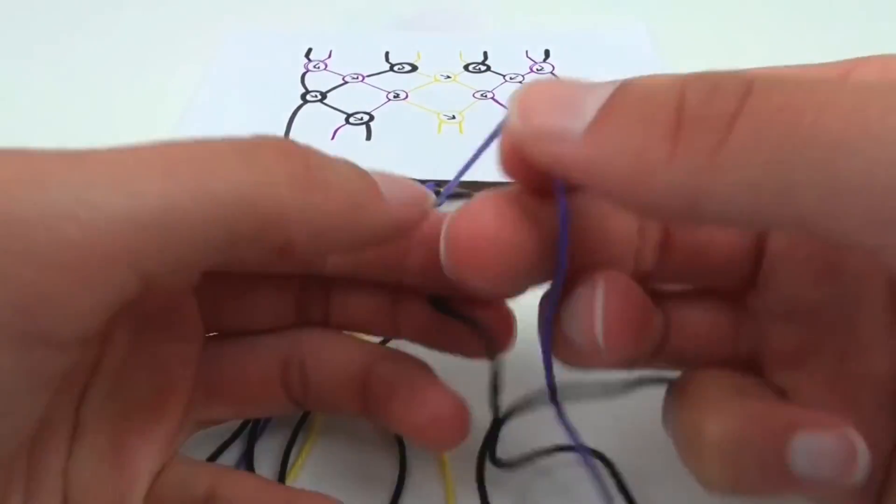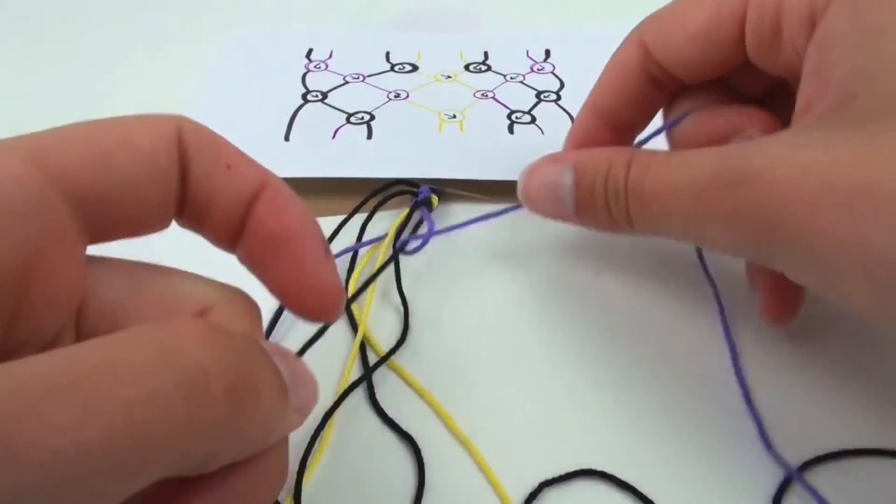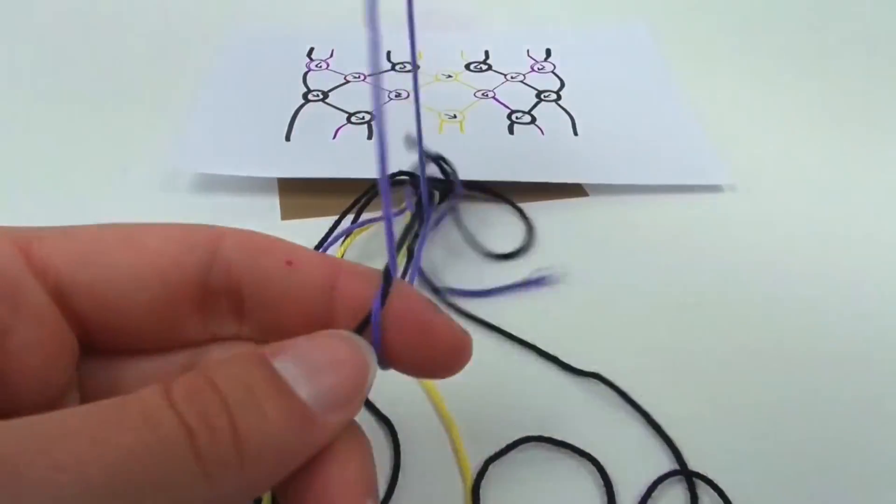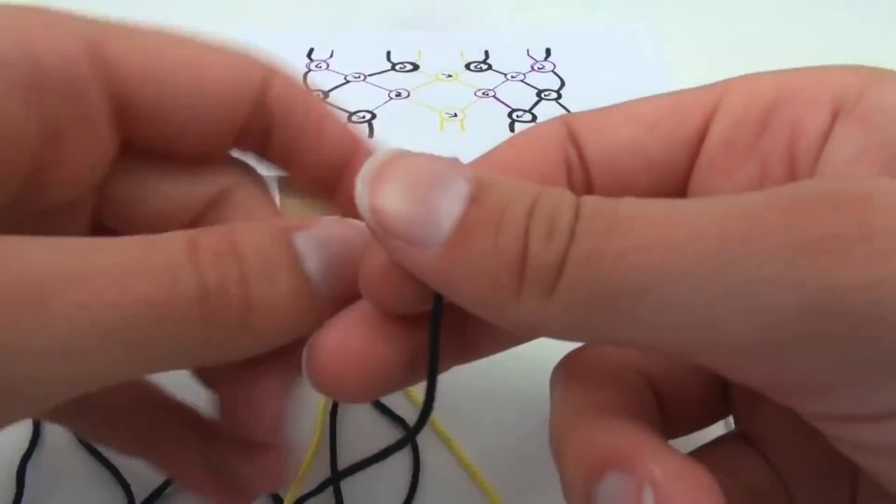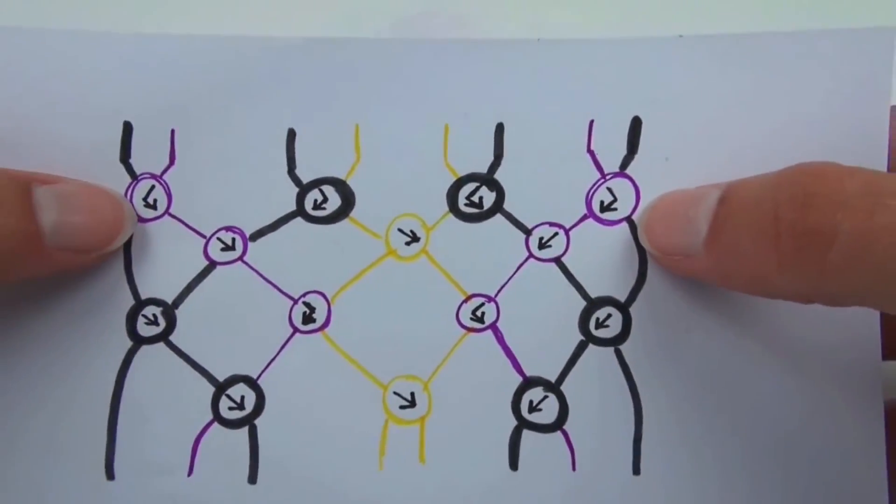Then we have the purple one towards the right with the black string, and then towards the left. That's our first row done.